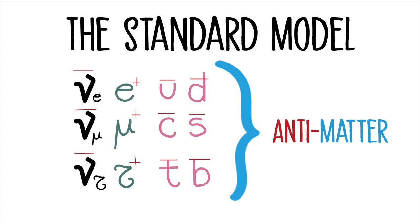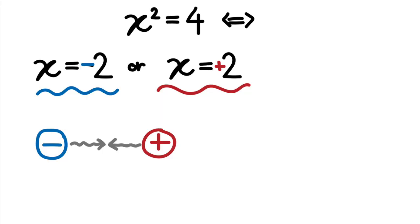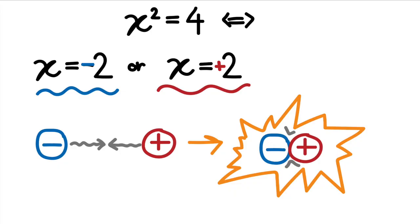The counterpart of this so-called matter is what we call antimatter. We can think of them as two solutions to the same equation. Particles and anti-particles share almost all characteristics, like mass and spin, but have opposite charge — we can look at this as the opposite sign of the two solutions. When a particle and their counterparticle meet, they annihilate, releasing energy in the form of radiation.